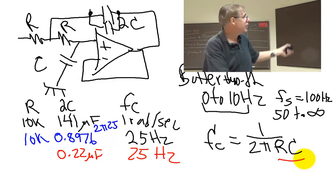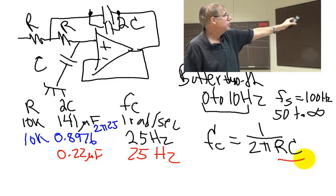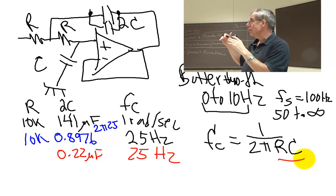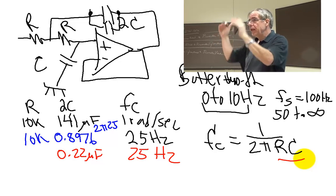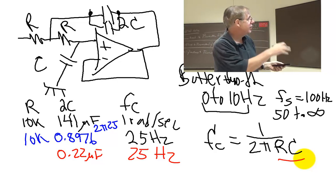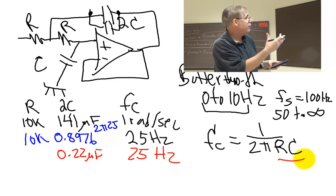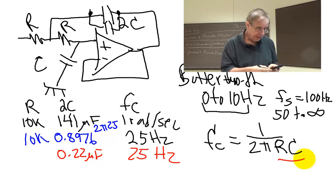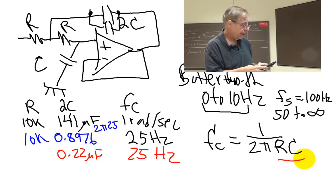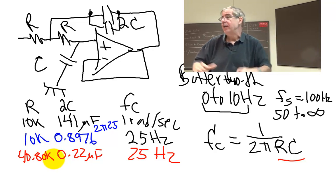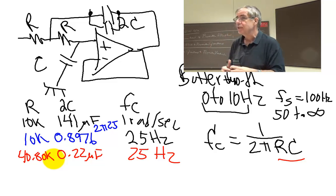Change the resistors. So now I'm going to get my calculator out and divide those two. If I make the capacitor smaller, what do I got to do to the resistor? Bigger. So I'm going to take 0.897 divided by 0.22, which is about four. Multiply it times 10, and I'm going to now ask for a 40.80k resistor. So you go back and get some 0.22 microfarads, three of them.